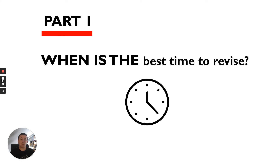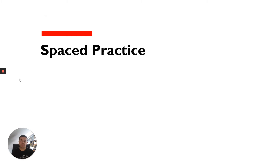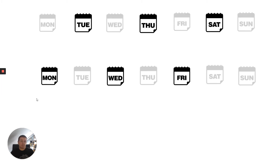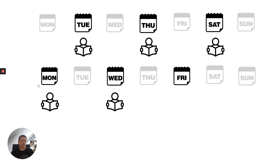Let's look at part one: when is the best time to revise. I'm going to give two techniques which can be used separately or together for maximum effect. The first one is spaced practice. Here I have an example of doing six hours of revision over a two-week period — Tuesday, Thursday, Saturday, Monday, Wednesday and Friday. That is going to be better than six hours all at once.